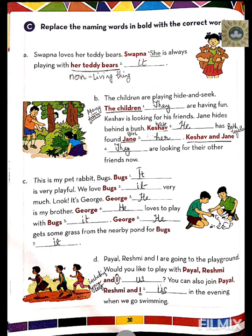Replace the naming words in bold with the correct pronouns. Number one: Sapna loves her teddy bear. Sapna is always playing with her teddy bear. Sapna is a girl, so we use 'she.' The teddy bear is a non-living thing, so we use 'it.' Sentence: Sapna loves her teddy bear. She is always playing with it.